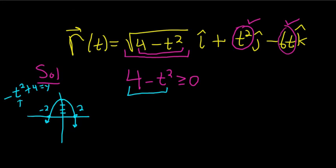We want to know when the graph is greater than or equal to 0, so it's going to be from here to here. So it would be negative 2 to 2, and that's the domain of the vector-valued function. I hope that made sense.